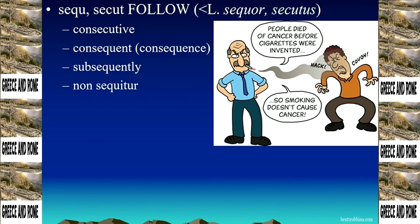A non sequitur comes right from Latin. 'That was a non sequitur' means it was something that does not follow from something else. It literally means 'it does not follow' — 'non' means 'not' and 'sequitur' means 'it does follow,' so 'non' negates that. 'People died of cancer before cigarettes were invented, so smoking doesn't cause cancer' — that's a non sequitur.